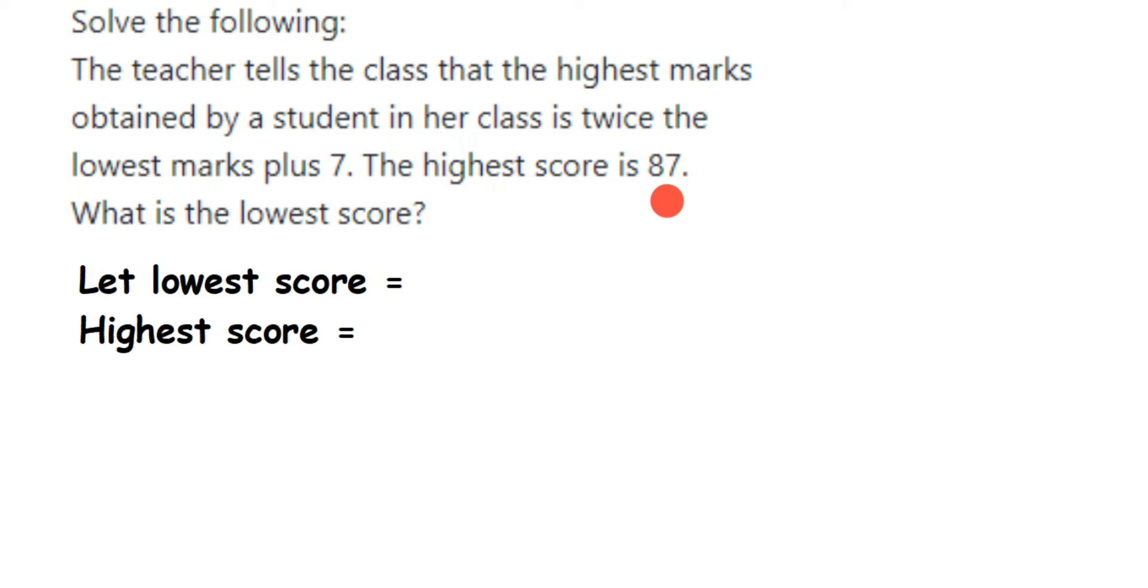What is the lowest score? They have given one value - the highest score is 87 - and they have given the relationship between the highest mark and the lowest mark, where the lowest mark is unknown for us.